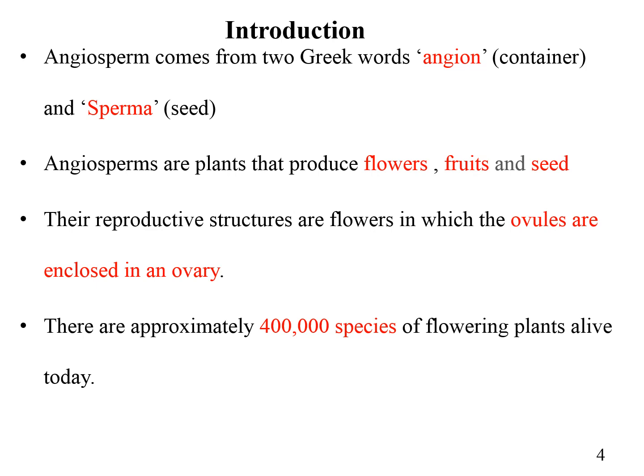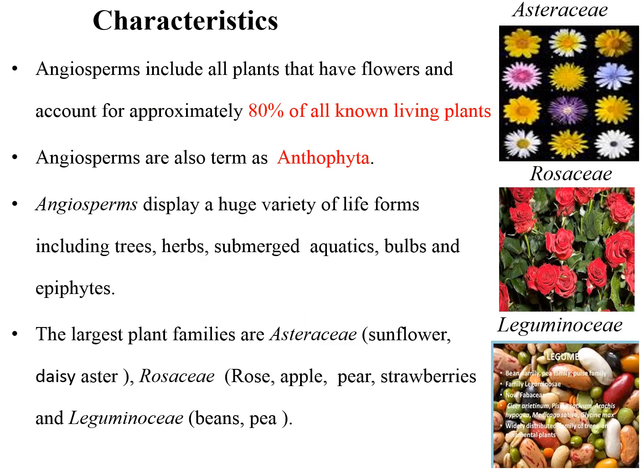Angiosperms are the largest group of plants on earth. There are nearly 400,000 species of flowering plants alive today. This group of plants is the dominant form of plant on the planet, comprising nearly 80 percent of all known living plants. Angiosperms are also called Anthophyta, which means flowering plants.